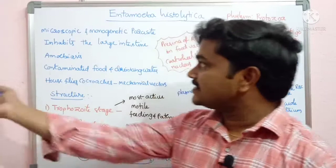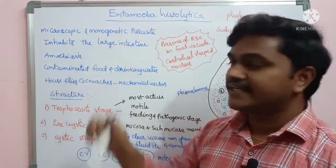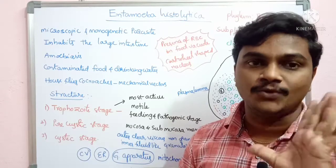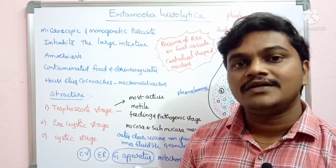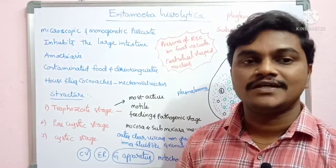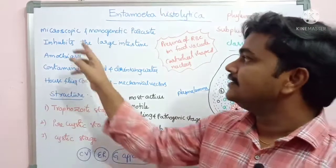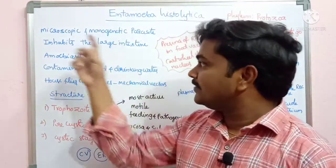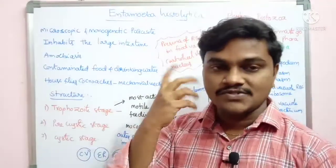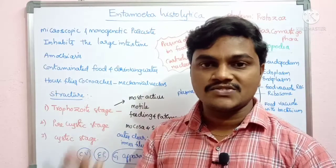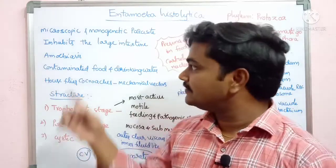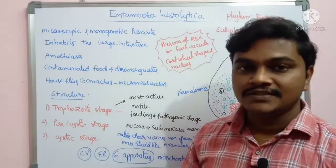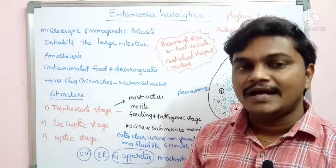It is a monogenetic parasite, meaning it completes its life cycle in a single host — in any human being. So it is called a monogenetic parasite. It inhabits the large intestine, residing there and causing the condition known as amoebiasis, also called amoebic dysentery.